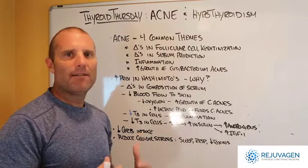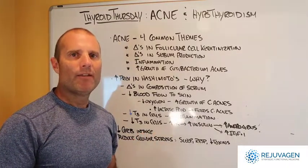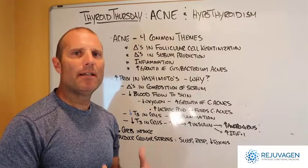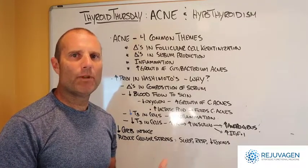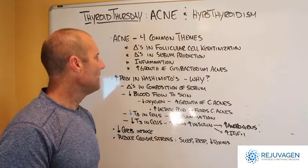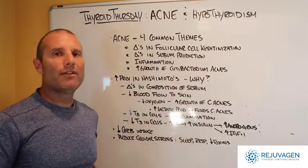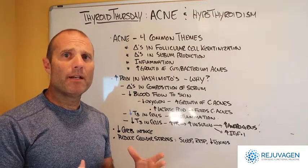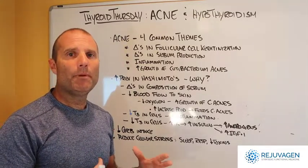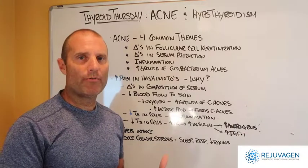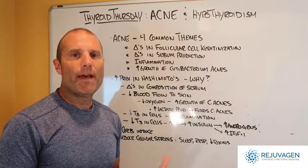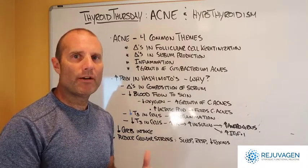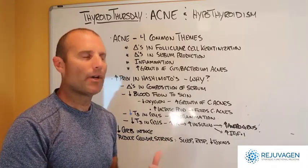C-acnes is a skin bacteria, and there's some argument whether it's the real cause or not, but they commonly see increased levels of C-acnes with people who have acne. There is a lot of literature saying that there's an increased incidence of acne in people who have Hashimoto's thyroiditis, and the reason for that may be that we have disrupted levels of thyroid hormone T3 reaching the cells, causing that cellular hypothyroid state.